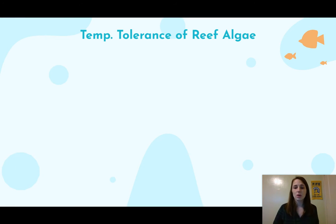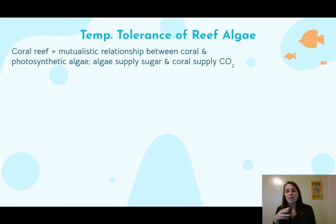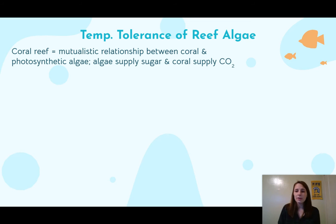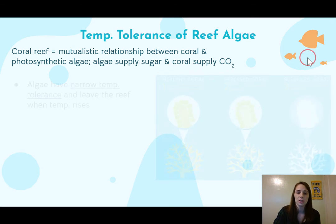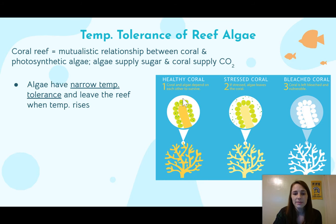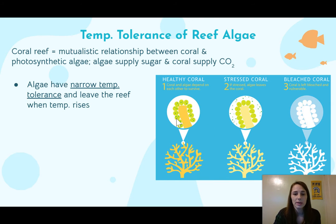Now let's focus on coral reefs. One thing that really impacts coral reefs is that they have a very specific temperature tolerance. A coral reef is actually a mutualistic relationship between coral and a photosynthetic algae. The algae supplies the sugar and the coral supplies the carbon dioxide for that algae to do photosynthesis. Coral is technically a living organism — it's considered an animal — and it has a symbiotic relationship with this algae.